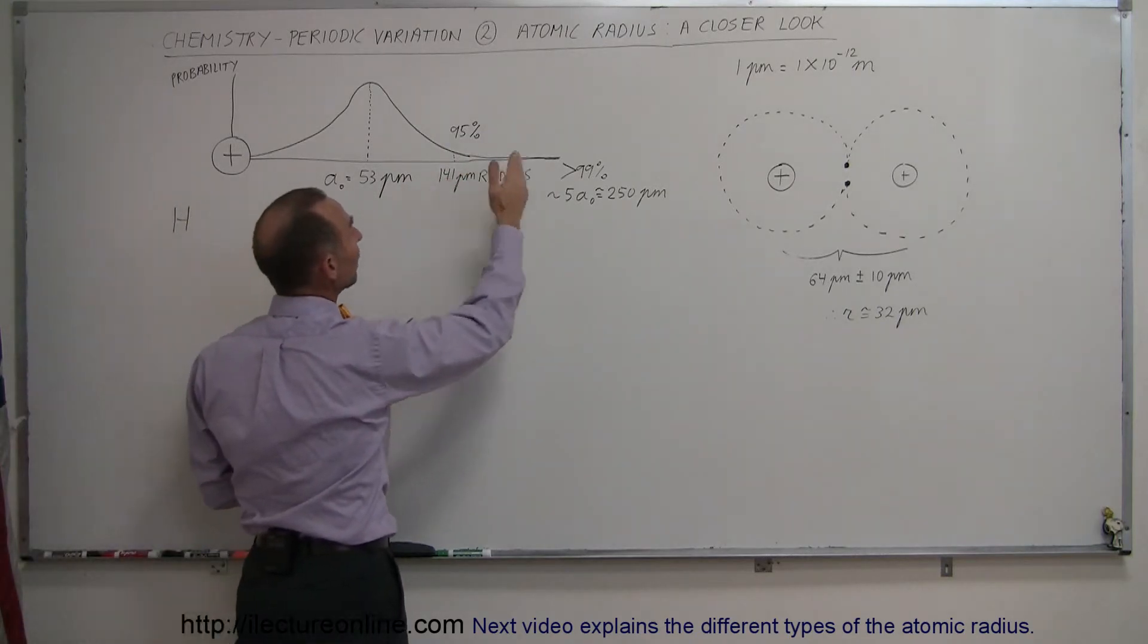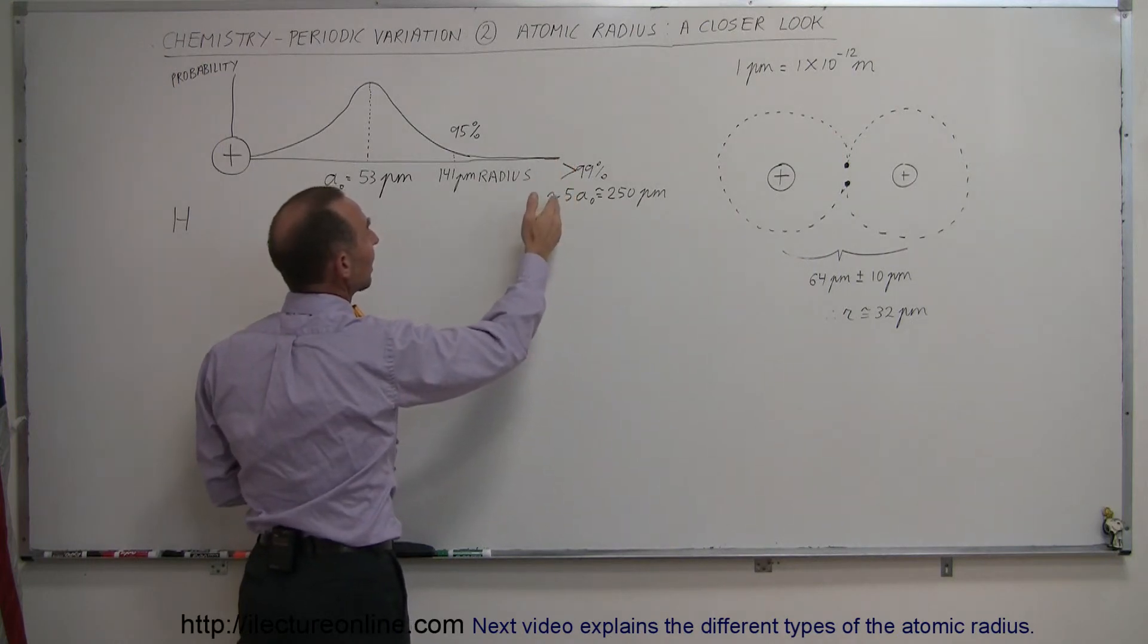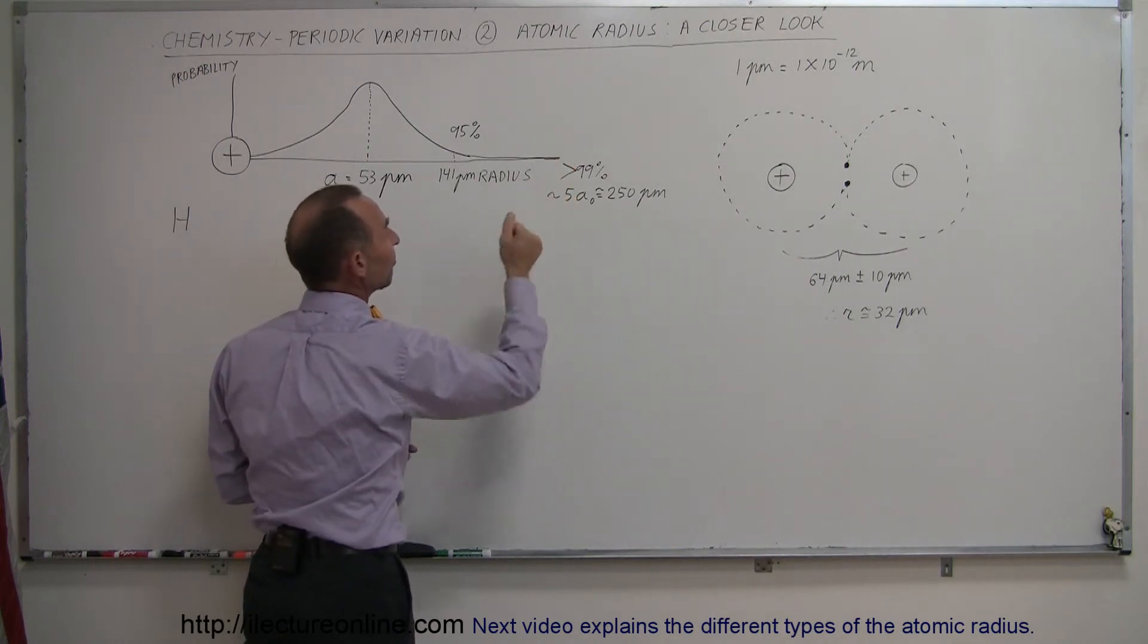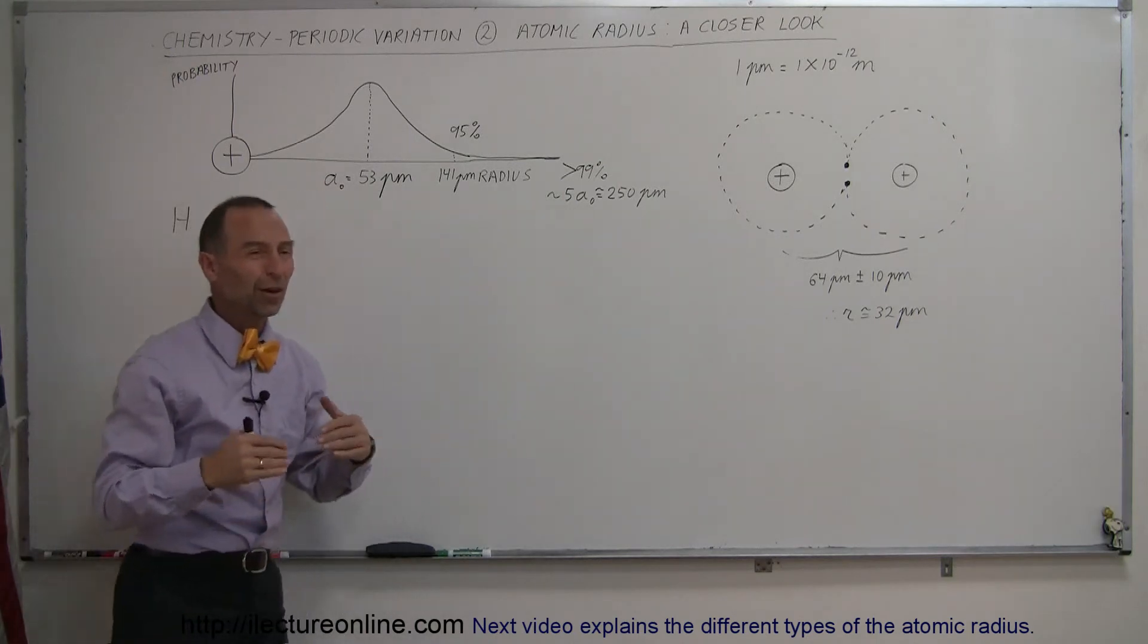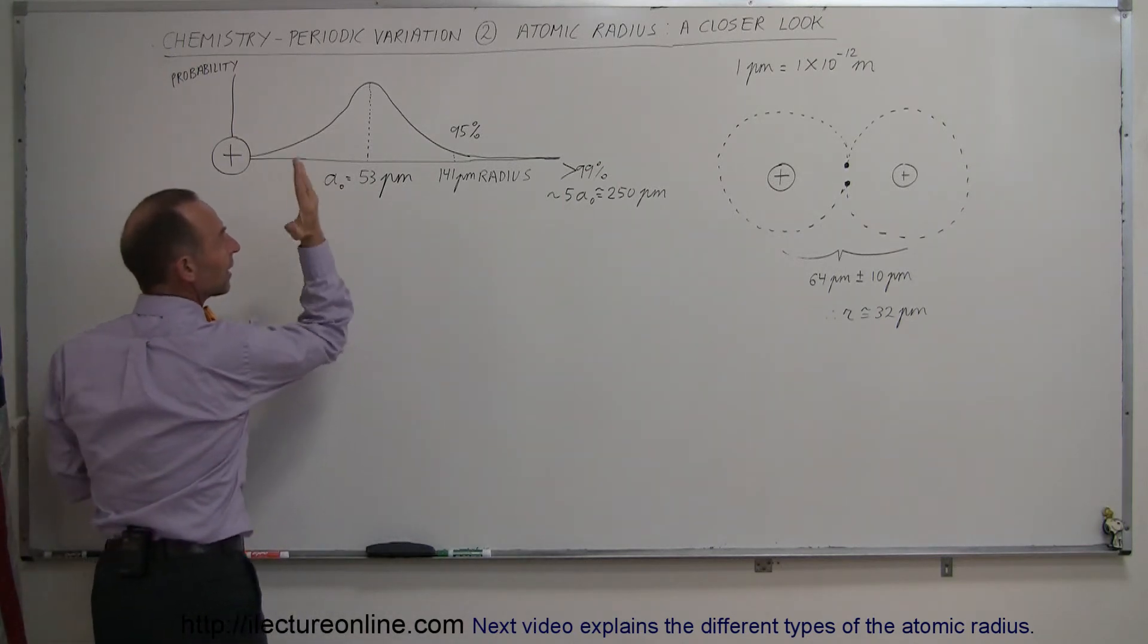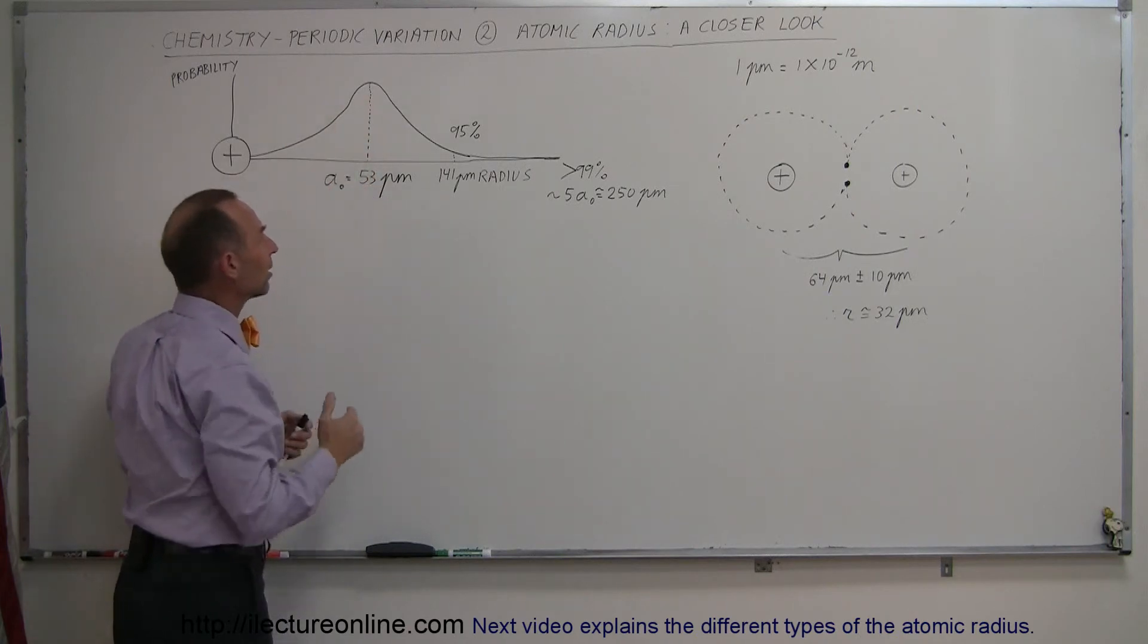And we know that more than 99% of the time, the electron will be at no greater than 5 times the Bohr radius distance, or 250 picometers. So, there's no such thing as a hard limit, as this is the edge of the hydrogen atom.